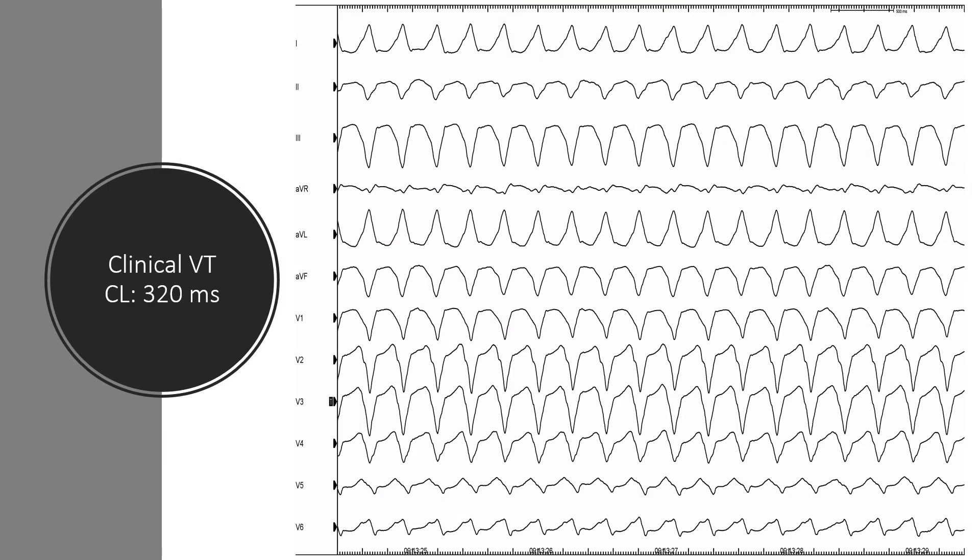Here we see the clinical VT of our patient with a cycle length of 320 ms, showing a left bundle branch block pattern, morphology in precordial leads with late transition, superior axis and a very positive QRS in lead 1, which suggests an origin on the right ventricular free wall.